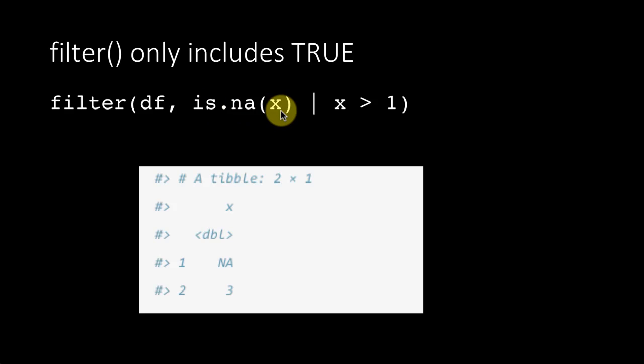So is.na of x, that is, the particular row is missing or the x for a particular row is greater than one. So either of these conditions is satisfied, return the result. So now you get two rows in the result. You get the NA, which is actually the second row of the original data frame, the first row of the result. And then you get the last row of the original data frame, which is the second row of the result. So you can use the logical operator to get that.